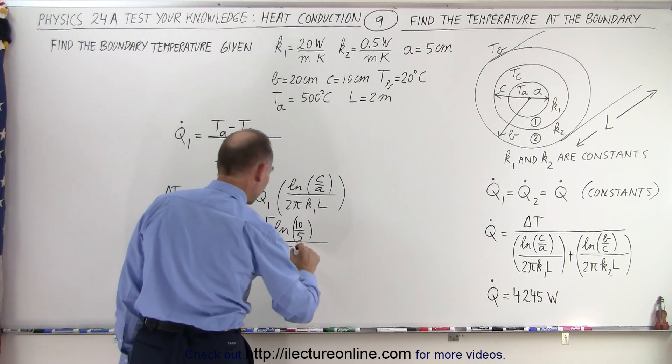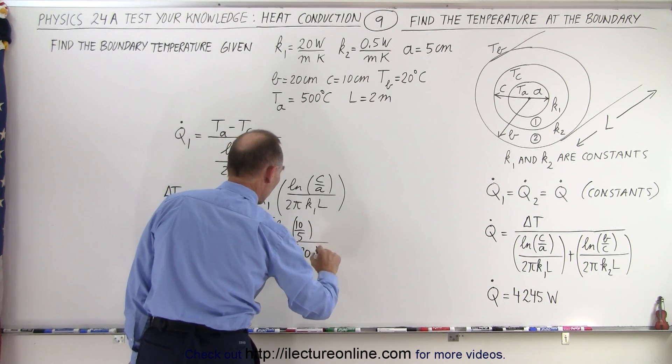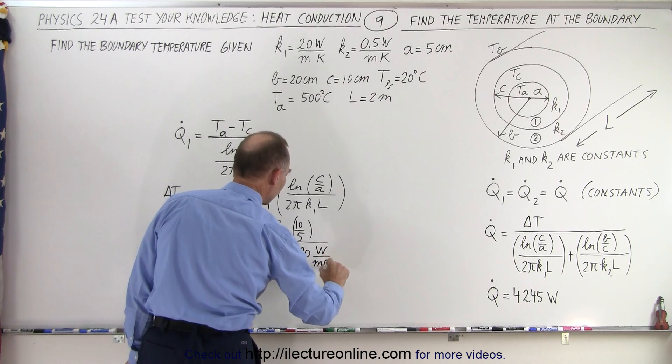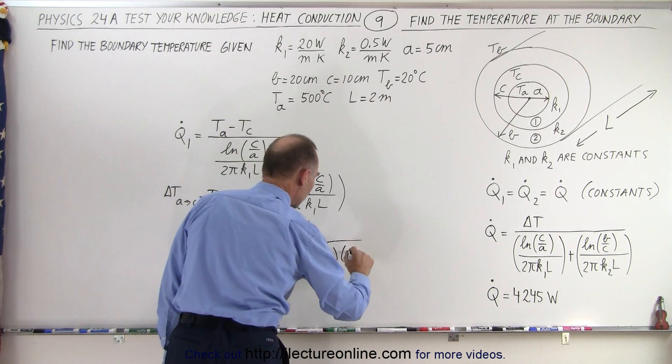Times K₁, and K₁ is going to be 20 watts per meter times centigrade degrees, and L is going to be 2 meters.